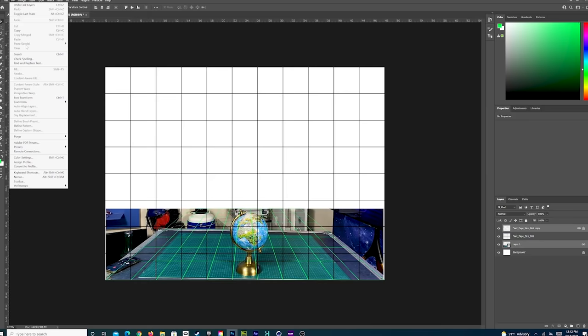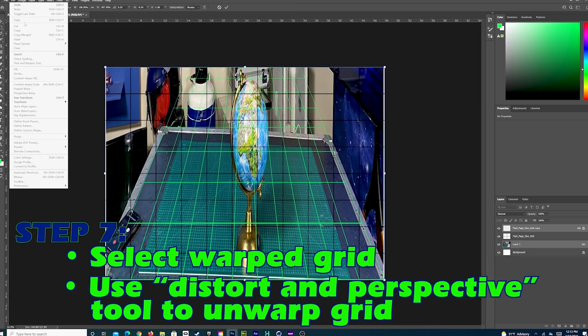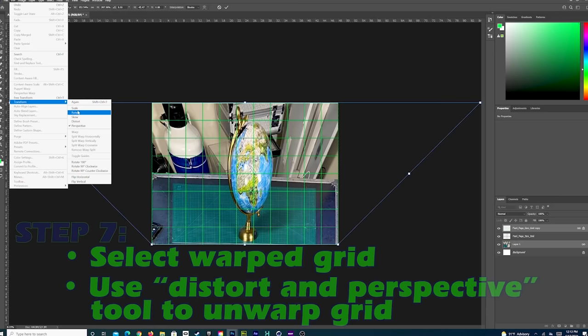Step 7, select a warp grid and your image. Use the distort and perspective tool to unwarp the grid so that it lines up with the original grid. Step 8, turn off the grid layers and your anamorphic image is ready to be printed.